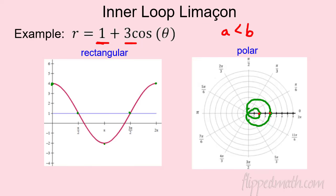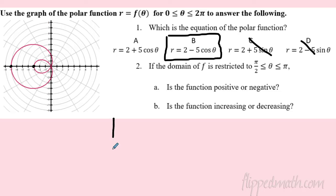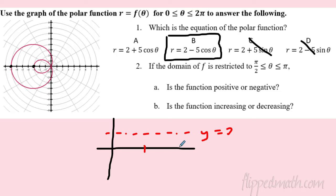Drawing the inner loop limaçon: it hits zero, loops around, comes back through zero again. Key features: max distance is 1 + 3 = 4; the inner loop extends to 3 − 1 = 2. For a matching problem — max distance 7, inner loop at 3 — we need values where sum is 7 and difference is 3, so a = 2, b = 5. It opens left-to-right so it's cosine: 2 − 5cos(θ).